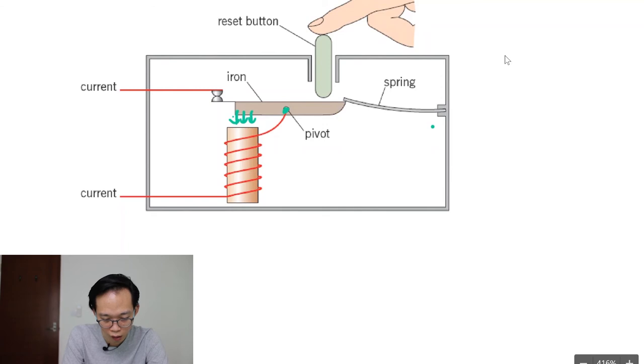Now this iron rod is pivoted at this point and so it is always trying to rotate this way, anti-clockwise. Now on this other end, you have a spring that's counteracting the anti-clockwise moments with some clockwise moments here. But what happens is that if the current flowing through the solenoid here, this wire, if this is excessively large,